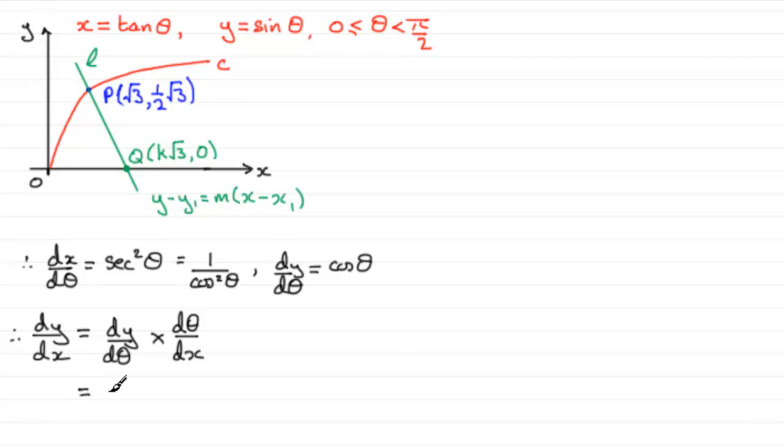So we know that therefore dy dx is going to be equal to this. And if we work this out, dy by d theta is going to be cos theta multiplied by d theta by dx. Well, we have dx d theta is 1 over cos squared theta. So we just need to invert this, reciprocate it if you like. And we then get this as being multiplied by cos squared theta.